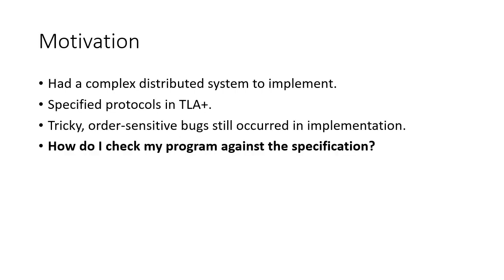My motivation was that I had a complex distributed system to implement. There was a central tree-like database and a collection of recipes, sort of like Apache Curator, that would be used as client protocols to establish different distributed systems primitives through communicating over this database. I specified the protocols in TLA+, which allowed me to check their liveness and safety, but tricky order-sensitive bugs still occurred in my implementation. So the question was, how do I check my program against the spec? The spec is much higher level, and I need to find a way to bridge those two.